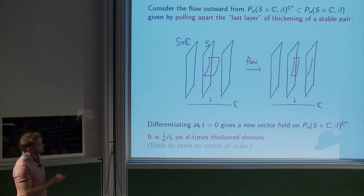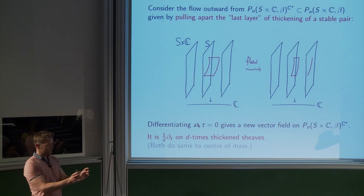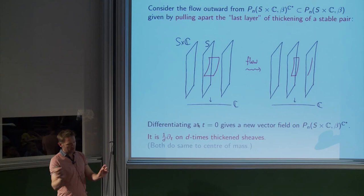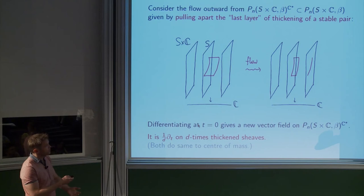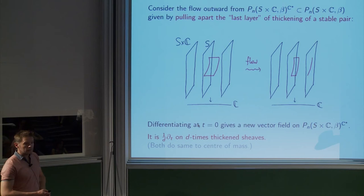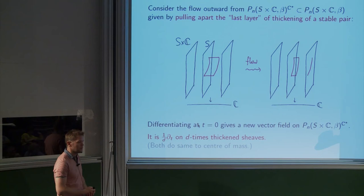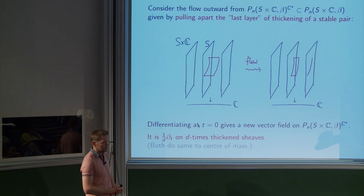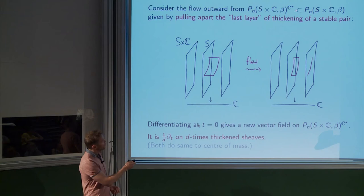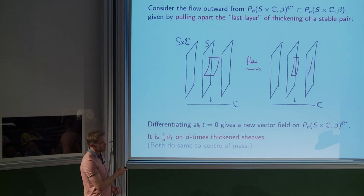There's another vector field that gives us a vanishing theorem, analogous to how the previous vector field gave us an obstruction showing ordinary invariants vanish. The idea: you take a vector field on this moduli space that sort of flows outwards from the C* fixed points. The C* fixed points are stable pairs supported on the central fiber but scheme-theoretically sticking out in the C direction — an n-fold thickened point. You break off the last point to give an (n-1)-fold thickened point and a separate point, and differentiating gives you a vector field on the moduli space.